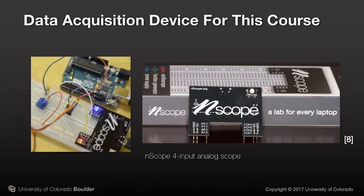Its power supply can only provide a modest amount of current and the signal generator goes only to 10 kHz. The nScope connects to your PC through a standard USB cable. It contains four input channels, so you can look at inputs, outputs, and other signals all at the same time.